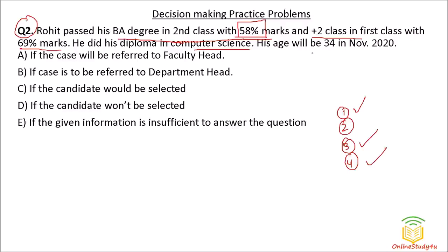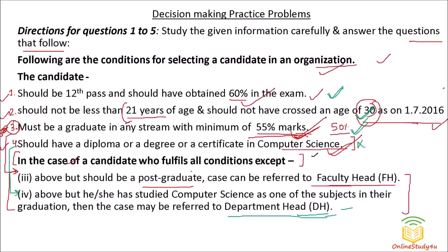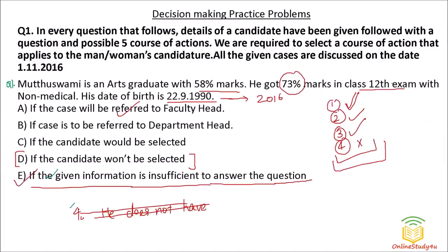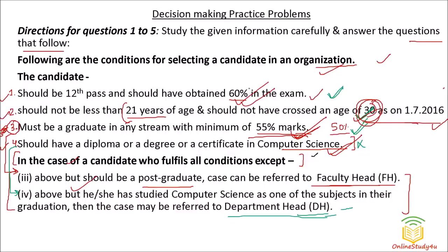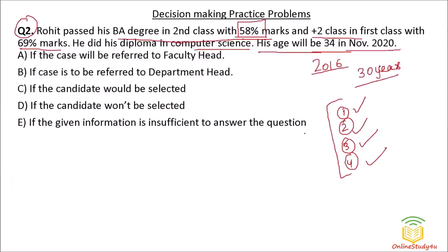His age will be 34 in 2020, so in 2016 his age will be 30. The condition says age should be between 21 and not have crossed 30 — so 30 years old means he is just satisfying Condition 2. He satisfies all four conditions: 12th pass with over 60 percent, age between 21 and 30, graduation with 58 percent, and diploma in computer science. So the candidate would be selected — Option C is the correct answer.